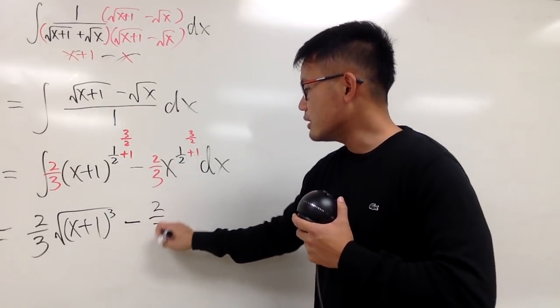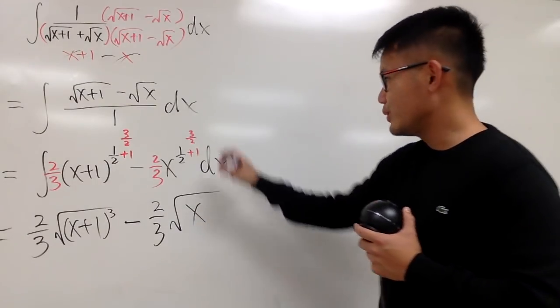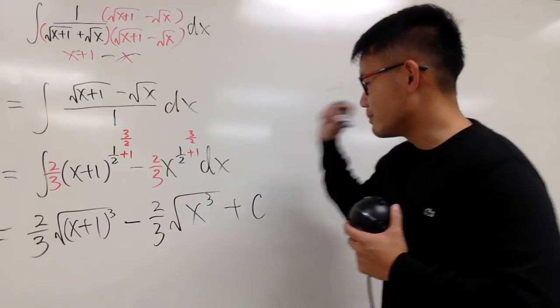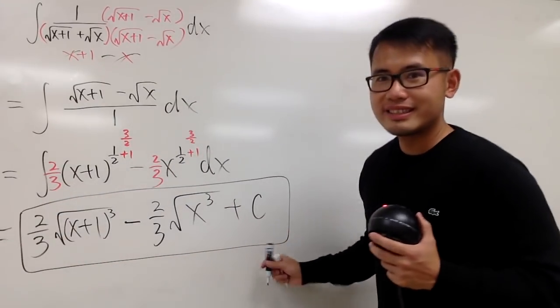And let's finish this right here, minus 2 third. And same thing, we get the square root of x to the third power. And we are done, so we can be happy, and let's put down plus C. And with that, that's it.